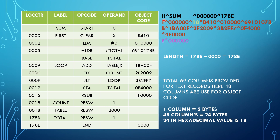Here we find the object program. The object program consists of 3 main sections: the header section, the text section, and the ending section. The header section has 6 columns for the program name, 6 columns for the starting address, and the total length. The text section starts with T, has 6 columns for the starting address, 2 columns for the total records in bytes, followed by the object code. The ending section has 6 columns for the starting address. The program name is SUM, with 3 columns left empty. The starting address is 0. In the text section, 18 is used because 48 columns are used for object code, and 1 column equals 2 bytes, so 48 columns equals 24 bytes, and 24 in hexadecimal is 18.